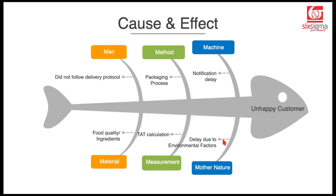It could also be mother nature. Let's say everything was on track, but suddenly the weather changed — it started raining. As a result, the person who left the restaurant to deliver your order was stuck in traffic, your order delayed, and that leads to a poor experience.